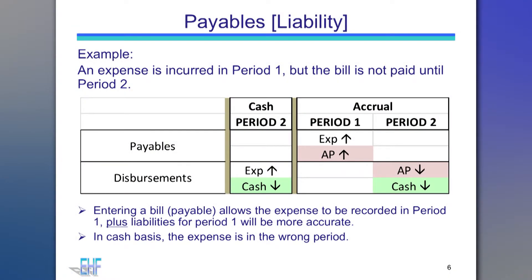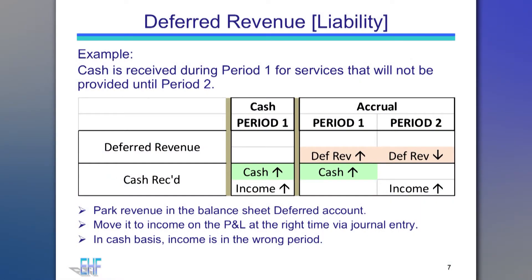Next, we'll discuss payables, which is also a liability account. If bills are sitting on your desk until you decide to pay them, it is more difficult to determine how much is currently owed. Seeing a full list of payables facilitates better cash flow management. Using accrual accounting, vendor payables, payroll liabilities, credit card charges, etc. can be recorded as expenses when they become owed in period 1 — see the middle column in this example — even though they may not be paid for until period 2. When the payment is made, cash is reduced and the liability is reduced. Expense is not affected.